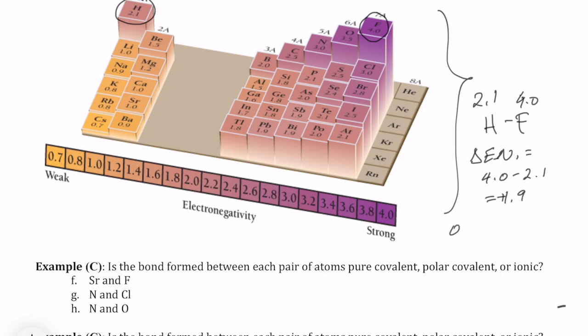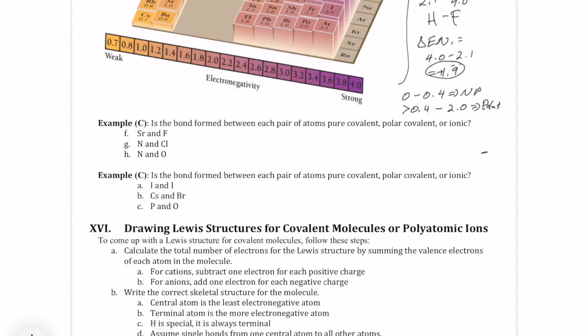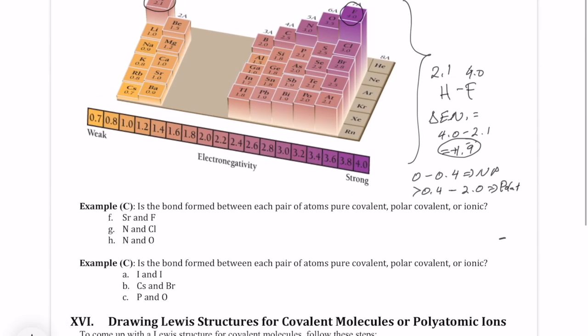Remember that as long as it's between 0 and 0.4, it's nonpolar. But if it's greater than 0.4 up to 2.0, then that's polar. This bond right here between H and F is going to be considered a polar bond. OK, so you can actually use this table of electronegativity values to figure out whether a bond is polar or nonpolar, just like the example of HF.